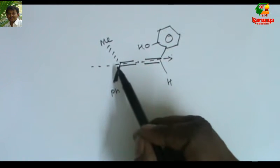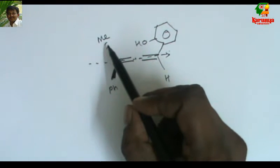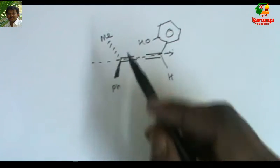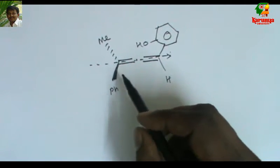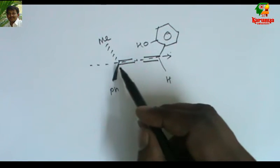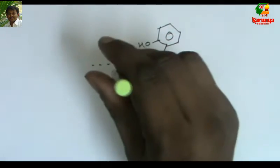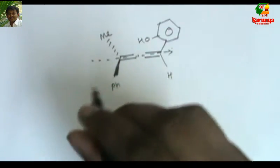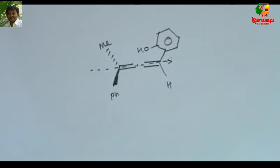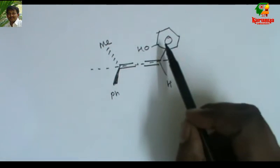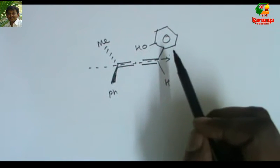The axis is here. The groups which have been shown with thick line and thin line are perpendicular to the plane of the paper — that is, phenyl is above the plane and methyl is below the plane of the paper. These two other groups are on the plane of the paper.